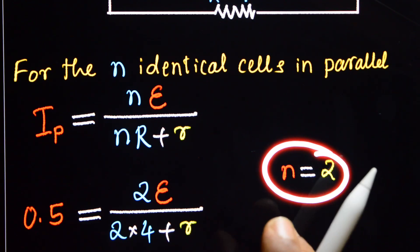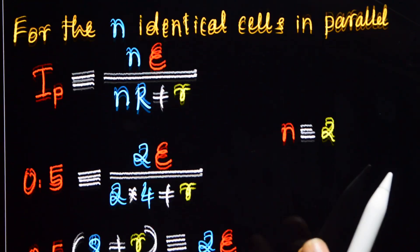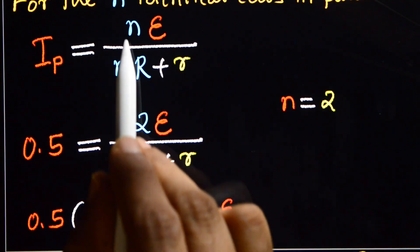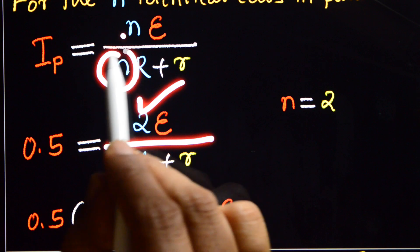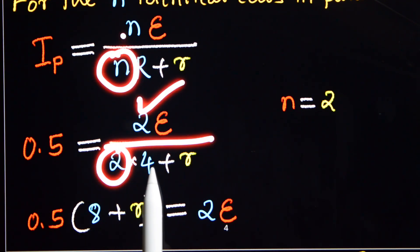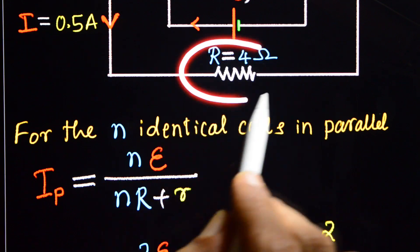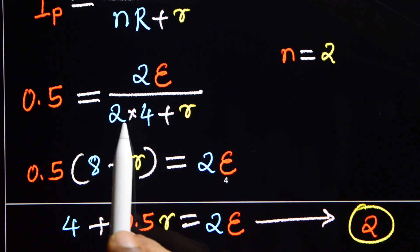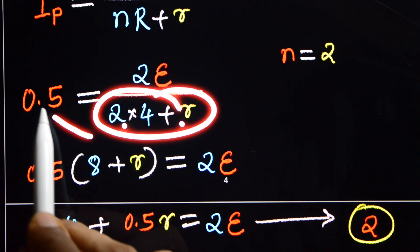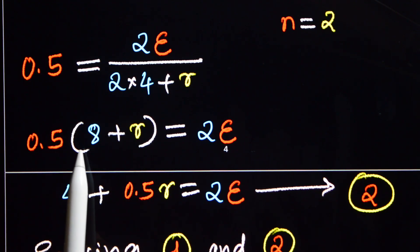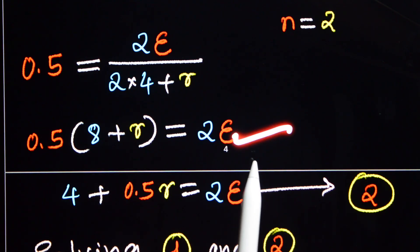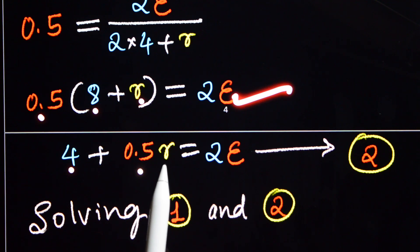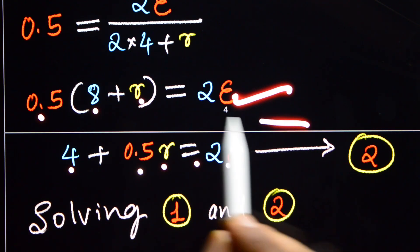Here N is equal to 2, because we have two cells in parallel. Therefore the current 0.5 equals 2 into E divided by 2 into 4 plus small r, which gives 2E divided by 8 plus small r. Multiplying both sides: 0.5 into bracket 8 plus small r equals 2 into E. So 0.5 into 8 is 4, and 0.5 into small r equals 2E. That is our equation number 2.